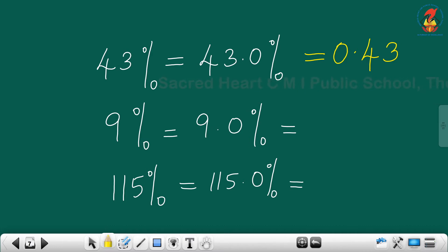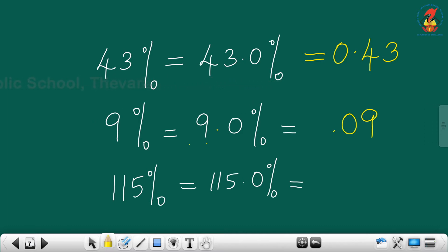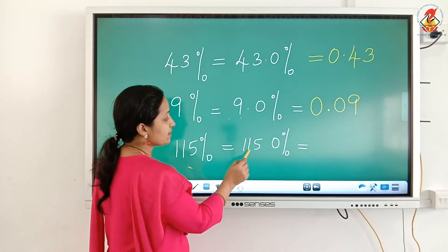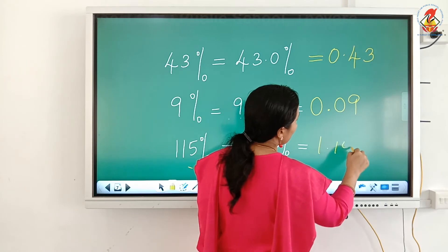9 percent is the same as 9.0 percent. Move the decimal point 2 places to the left side — first place, second place. If there is no number in the whole number part, put 0 there. So the answer is 0.09. Now, 115 percent is the same as 115.0 percent. Move the decimal point 2 places to the left — first place, second place — and the answer is 1.15.